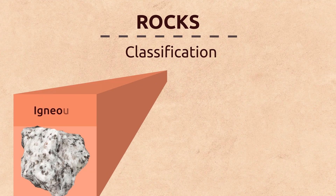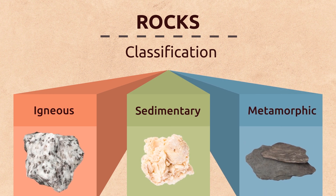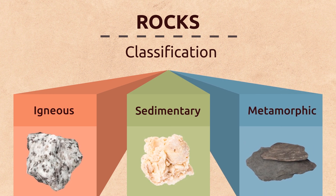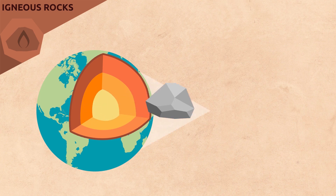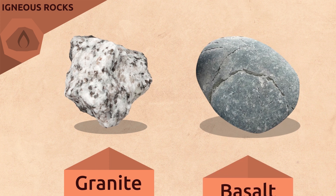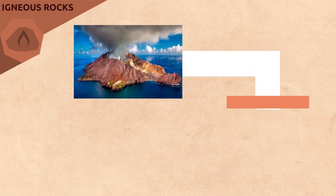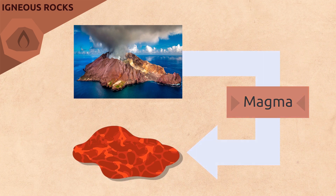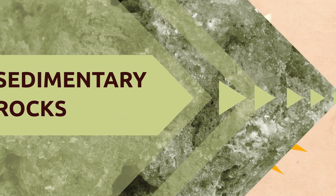Igneous rocks are very hard rocks formed deep inside the earth. Examples of igneous rocks are granite or basalt. Both are formed from magma which erupts as volcanic lava. As soon as it reaches the surface of the earth, lava cools and solidifies rapidly.